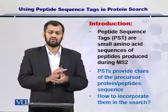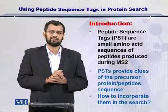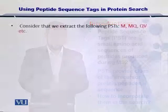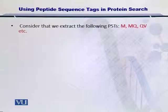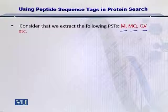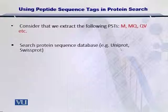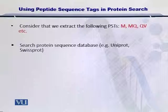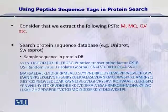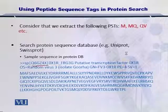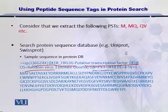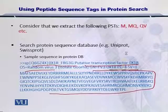So let's see how we incorporate this process — the entire search process — into the peptide sequence tag search. Let's take a look at the example we are following. We have the following peptide sequence tags that were reported, and now we would want to search them in the protein sequence database. There are multiple protein sequence databases available online. Below I have listed a sample sequence from UniProt, where you can see the accession numbers and the description of the protein.